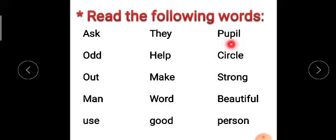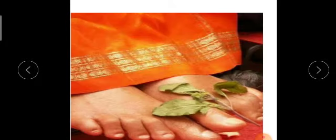P-U-P-I-L, Pupil. C-I-R-C-L-E, Circle. S-T-R-O-N-G, Strong. B-E-A-U-T-I-F-U-L, Beautiful. P-E-R-S-O-N, Person. Like this you have to read. Shall we meet in the next class? Sai Ram, Sai Ram.